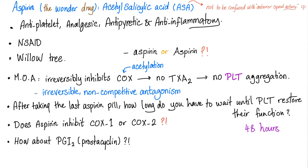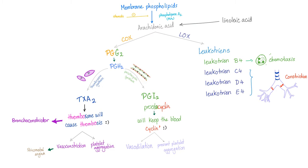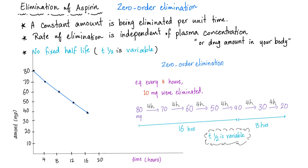Quick review: aspirin is anti-platelet, analgesic, antipyretic, and anti-inflammatory. It irreversibly inhibits cyclooxygenase via acetylation. When you have no cyclooxygenase, you have no thromboxane A2, and you have no platelet aggregation. Aspirin inhibits cyclooxygenase 1 and 2 — I've talked about the difference in a previous video. Aspirin is eliminated via zero-order elimination, where the half-life is variable, as discussed in a previous video in this series.